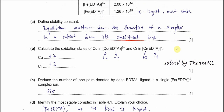Part B: calculate the oxidation states of copper and chromium in the complex ions. For copper, EDTA has a charge of 4 negative, and the overall charge is 2 negative, so copper must be +2, since +2 minus 4 gives minus 2. For chromium, EDTA is 4 negative and the overall charge is negative, so chromium must be +3. We get +2 for copper and +3 for chromium.